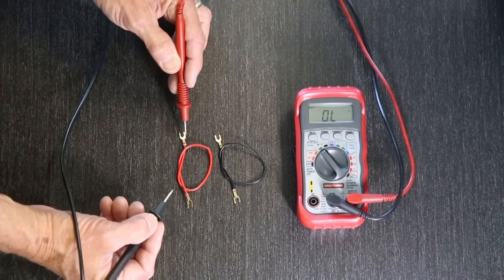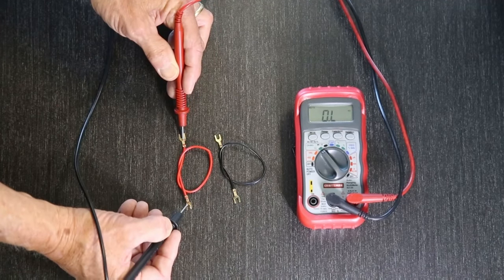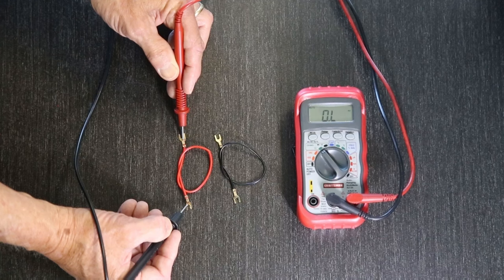Now let's test the damage wire the same way. Now the meter shows OL. The meter is telling us it can't make a circuit, because there's a break somewhere in the wire. That's why it couldn't light the bulb. This is a broken circuit.